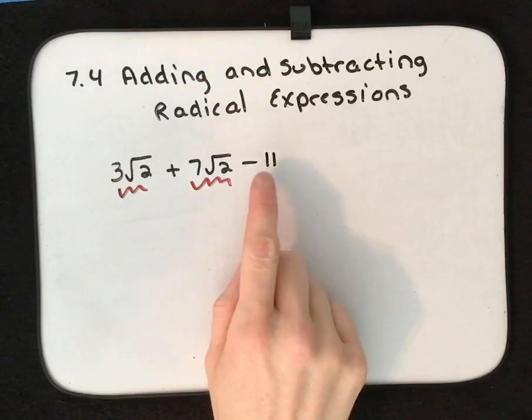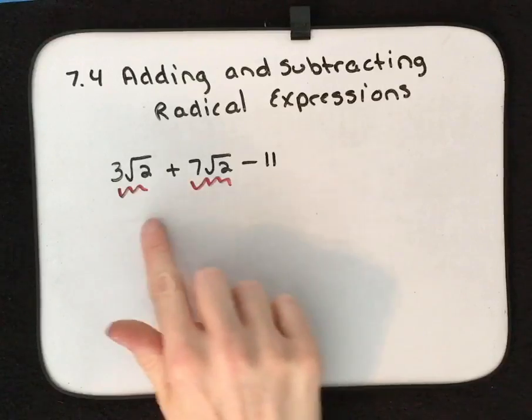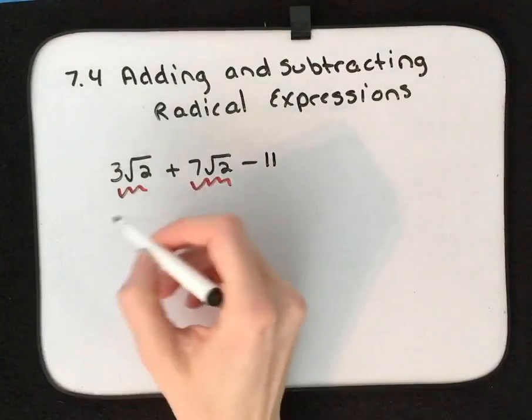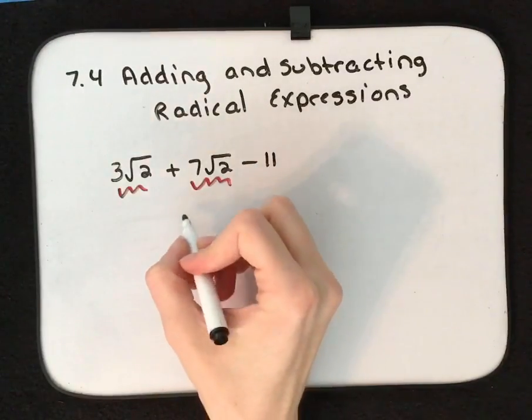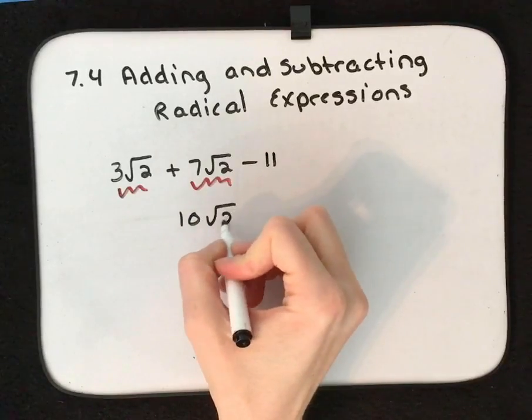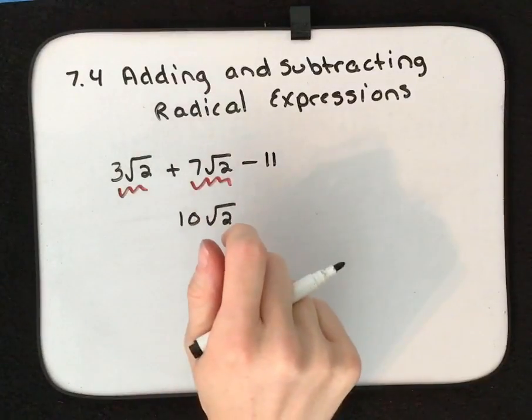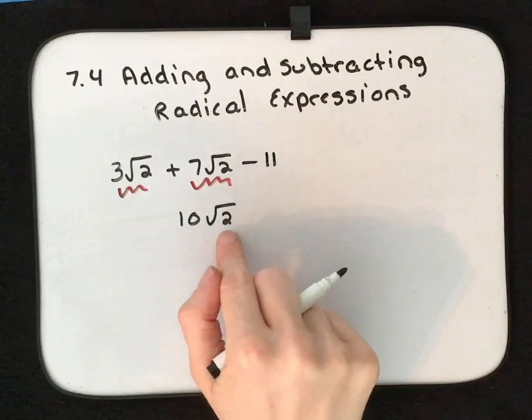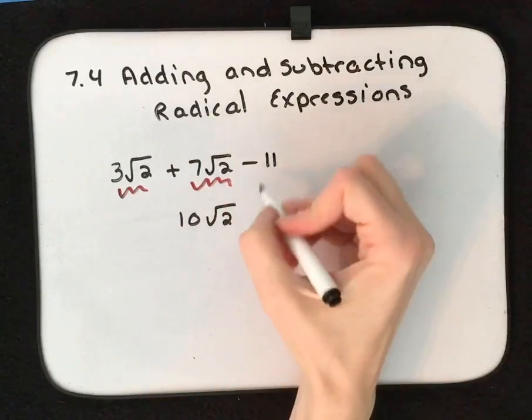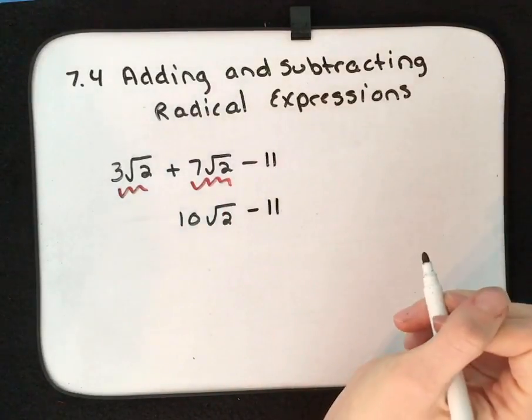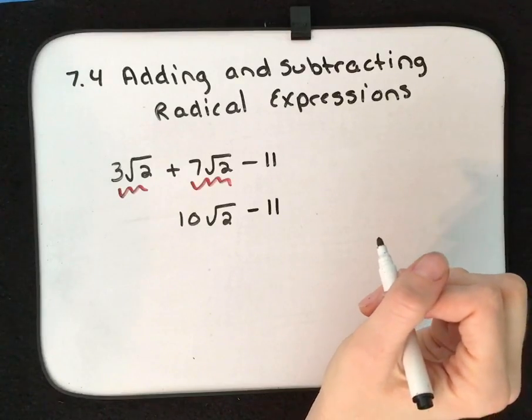11 doesn't match, so this 11 cannot be combined with these pieces. So 3√2 + 7√2, that would give us 10√2, just like if it were 3x + 7x. In this case, it's √2. They are common terms, like terms. So this will simplify to 10√2 - 11.